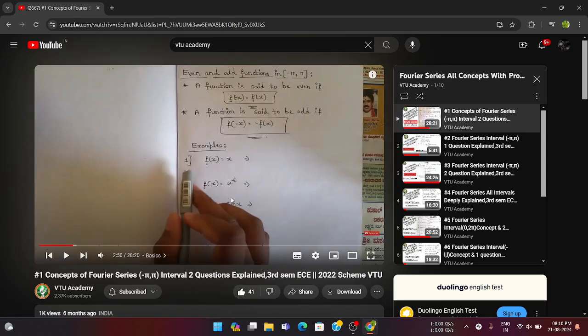Hello everyone, welcome to this video. This video is specially for those who have a backlog subject BMAT EC 301, that is Advanced Mathematics for EC engineers. Those who have failed third semester — the supplementary exam would be conducted tomorrow. In order to make you pass, I am going to provide some very important concepts from all five modules which you need to study before giving the exam.